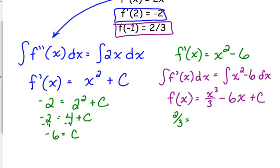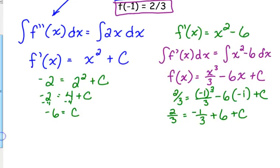The original function equals 2 thirds when x is negative 1. So negative 1 cubed is negative 1, so that's negative 1 third. Negative 6 times negative 1 is positive 6. Let's see here. 6 expressed as something over 3.